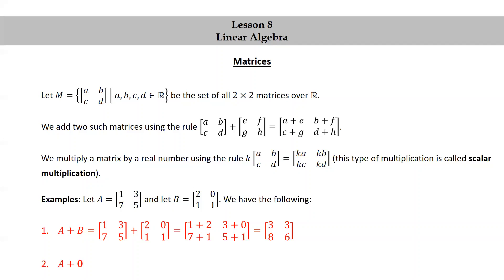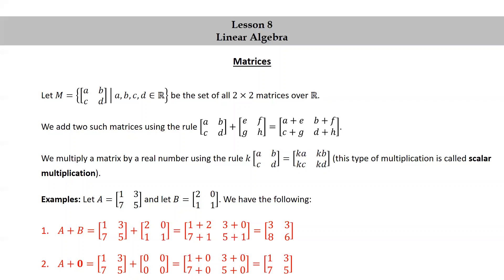The matrix A plus the zero matrix equals [1, 3; 7, 5] + [0, 0; 0, 0], which equals [1+0, 3+0; 7+0, 5+0], and that simplifies to the matrix [1, 3; 7, 5].